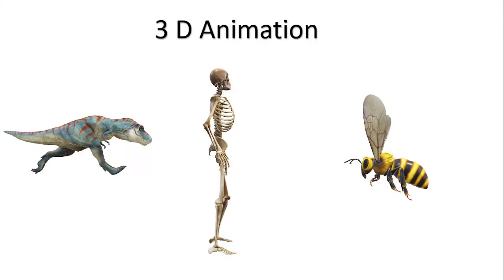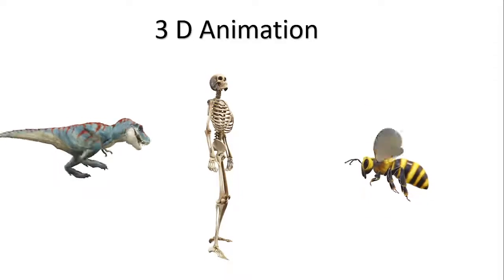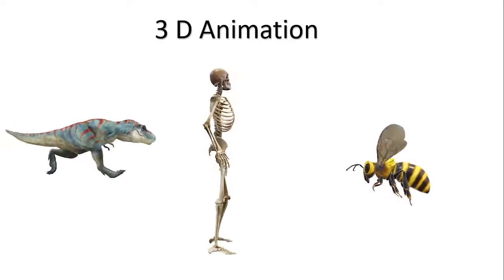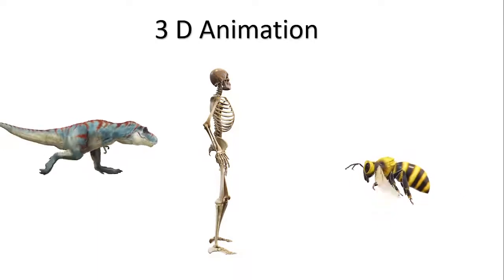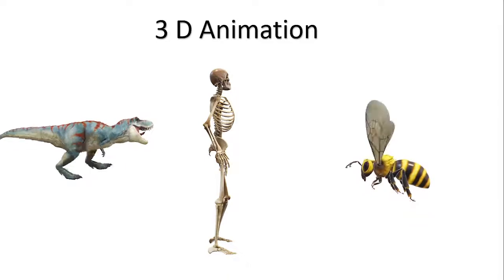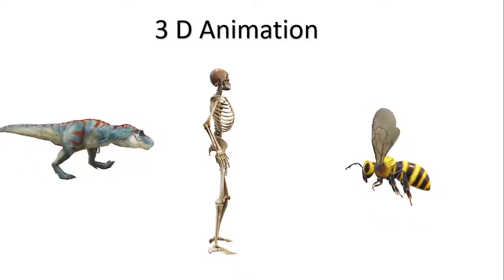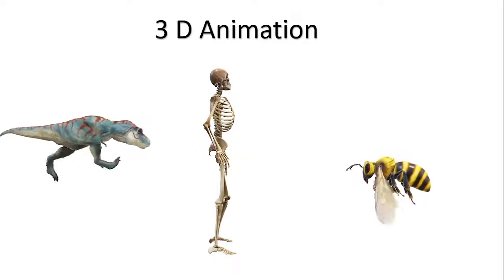If you want to show your presentation in full view mode, press F5 then Enter. You can see all the 3D models working with 3D animation. So if you need any kind of 3D model or 3D animation in your PowerPoint slide, you can add them to your presentation this way.